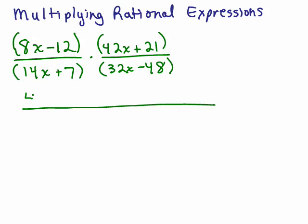Out of the top, I could take out a 4 times 2x minus 3 out of the first one. And out of 42x plus 21, I could take out a 21 and that would give me a 2x plus 1.